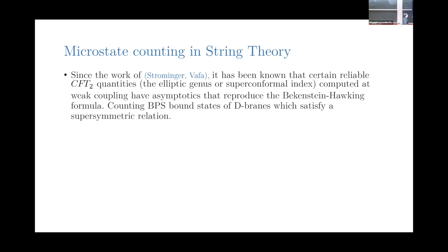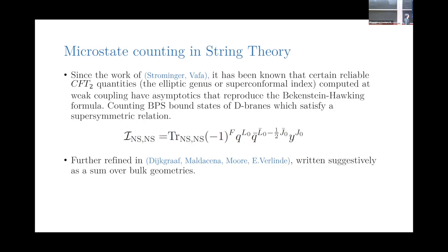Let me briefly review the microstate counting in string theory. Since the work of Strominger-Vafa, it's been known that especially in a CFT2 context, there are reliable quantities like the elliptic genus or the superconformal index which you can compute at weak coupling and they're independent of the coupling. So you can extrapolate them from the regime where bound states of D-branes are a good description to a regime where the bulk AdS physics and bulk quantum gravity physics, including black holes, becomes important.